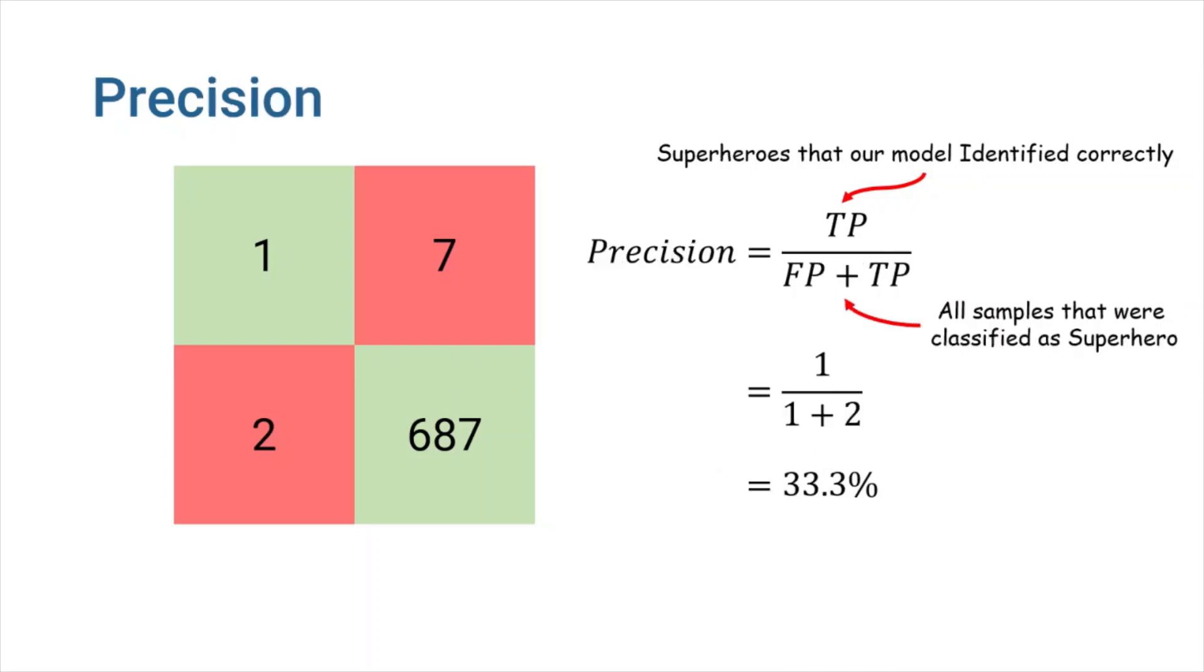Precision is another valuable metric. It is the percentage of positively classified samples that were actually correct. In this example, we should divide the number of correctly classified superheroes by the total number of people that our model classified as superheroes, including poor normal people who were labeled as superheroes.